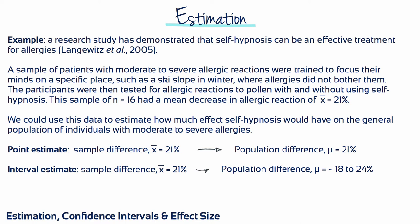Let's go through an example. A research study has demonstrated that self-hypnosis can be an effective treatment for allergies. A sample of patients with moderate to severe allergic reactions were trained to focus their minds in a specific place where allergies do not bother them, such as a ski slope in winter. The participants were then tested for allergic reactions to pollen with and without using self-hypnosis. This sample of N equals 16 had a mean decrease in allergic reaction of 21%. A point estimate would infer that the population would also see a 21% decrease, whereas the interval estimate would infer that the population would see a decrease of somewhere between 18 and 24%.